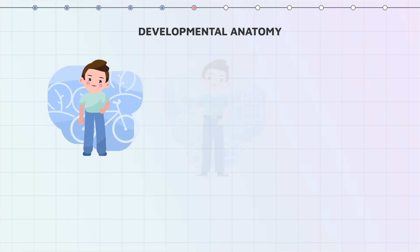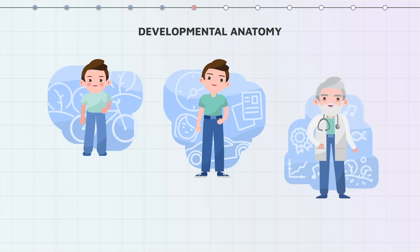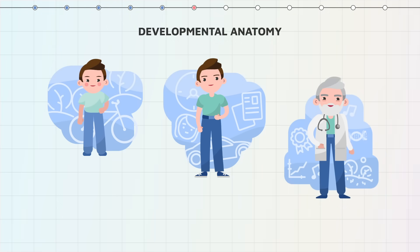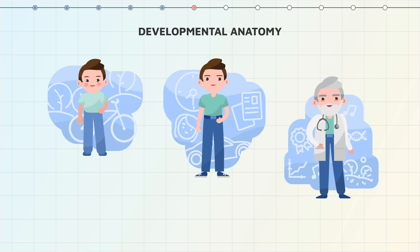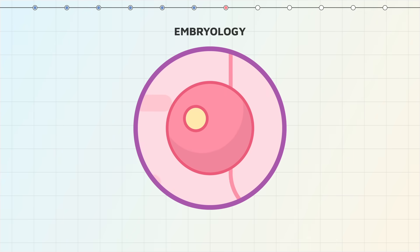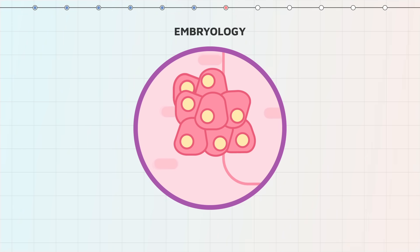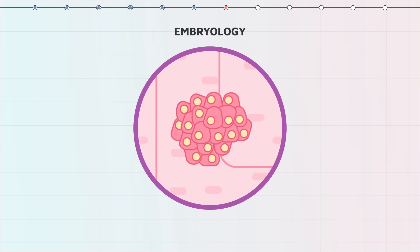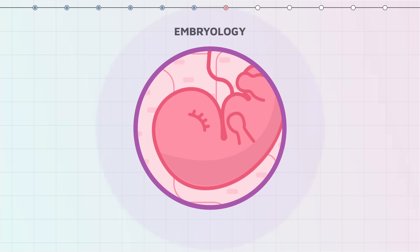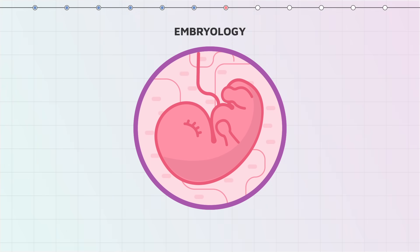Developmental anatomy is a subdivision of anatomy which looks at structural changes during the life course. Embryology is a subdivision of developmental anatomy which deals with changes that occur before birth.